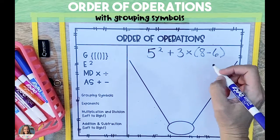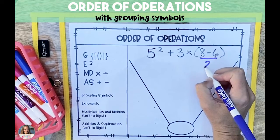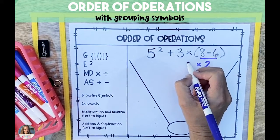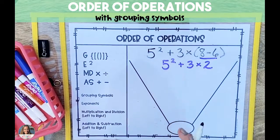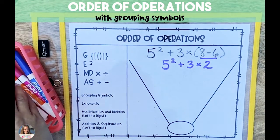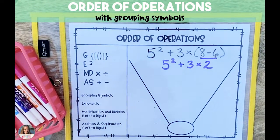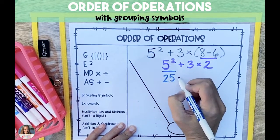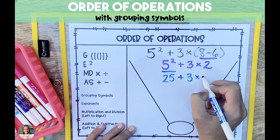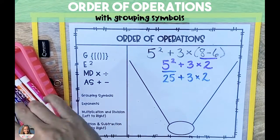The first operation that we're going to solve is inside of the parentheses, and 8 minus 6 is 2. We're going to write it directly underneath the parentheses, and then we're going to bring down all of the pieces of the problem that we haven't solved yet. The second operation that we're going to tackle is the exponent, 5 squared is 25, and we're going to bring the rest of the problem down again.